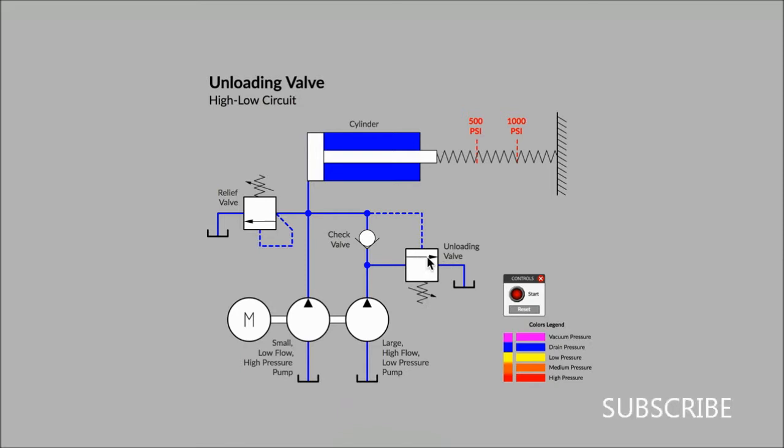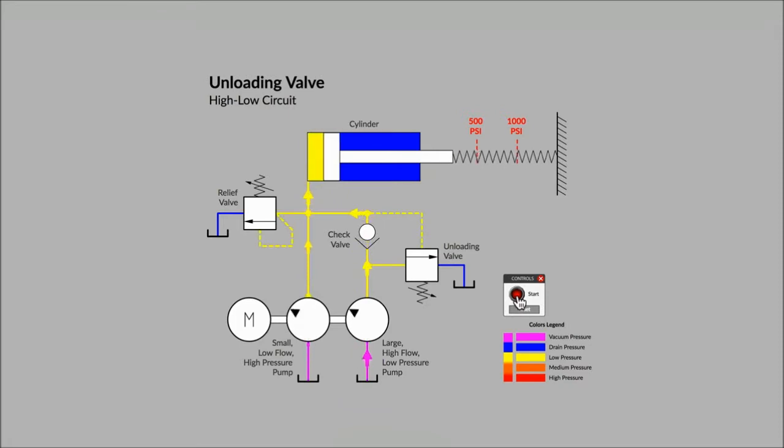The poppet, represented by an arrow inside of the box, will move to the open position against the force of the spring only when the pilot pressure is high enough. See if you can figure out what the pressure setting is for the relief valve and for the unloading valve.